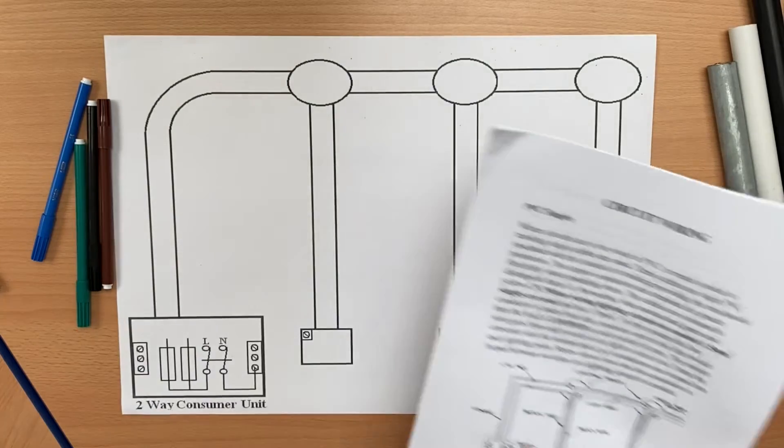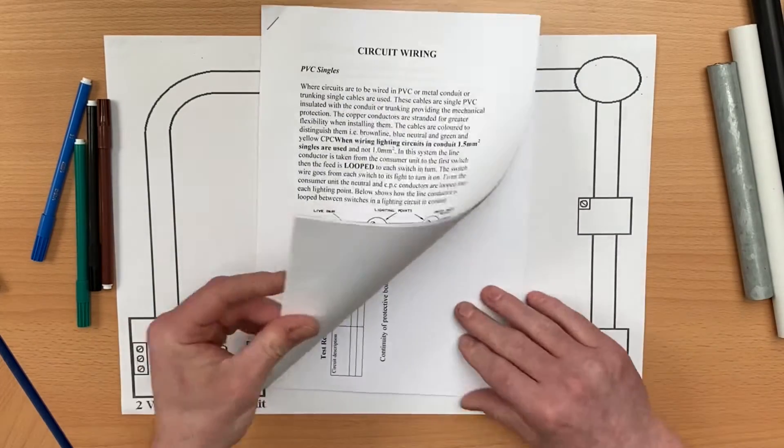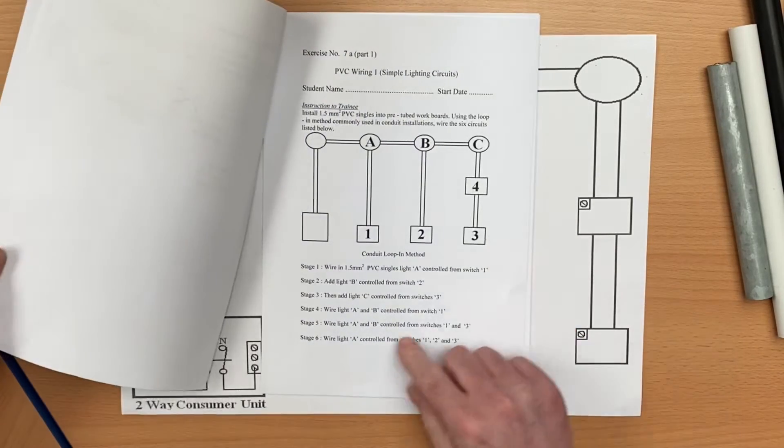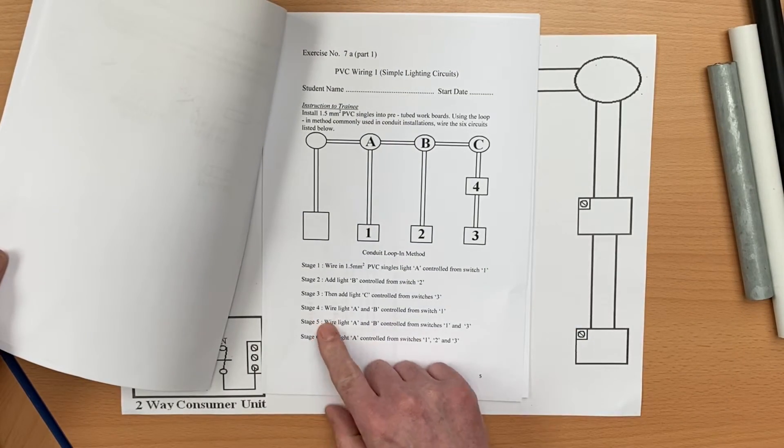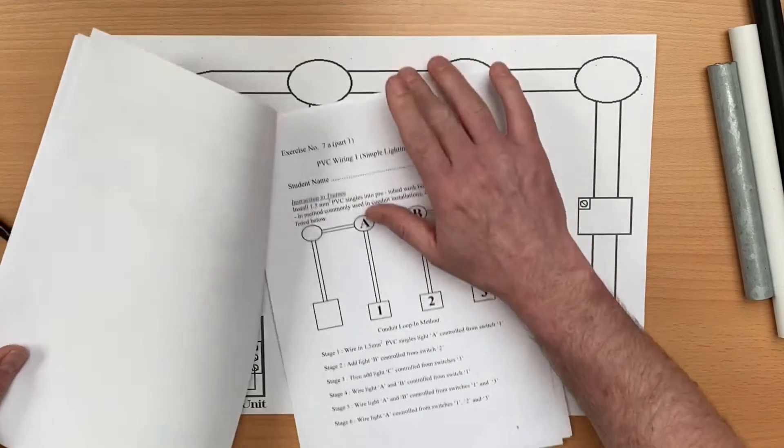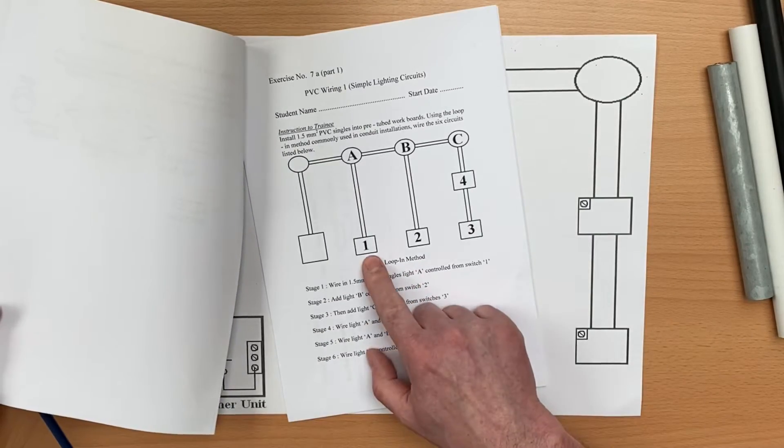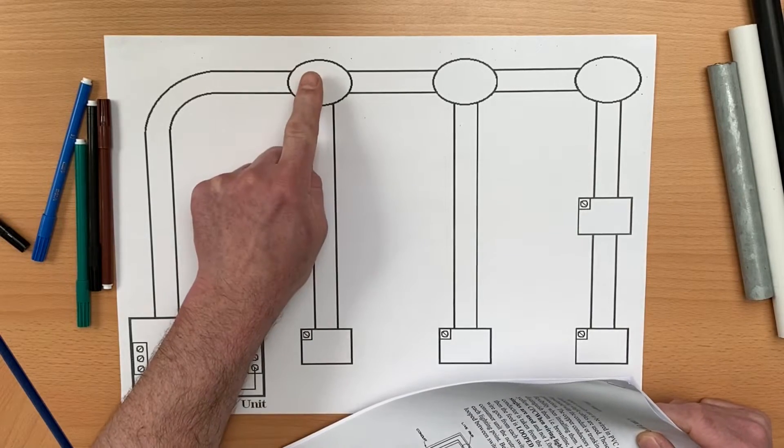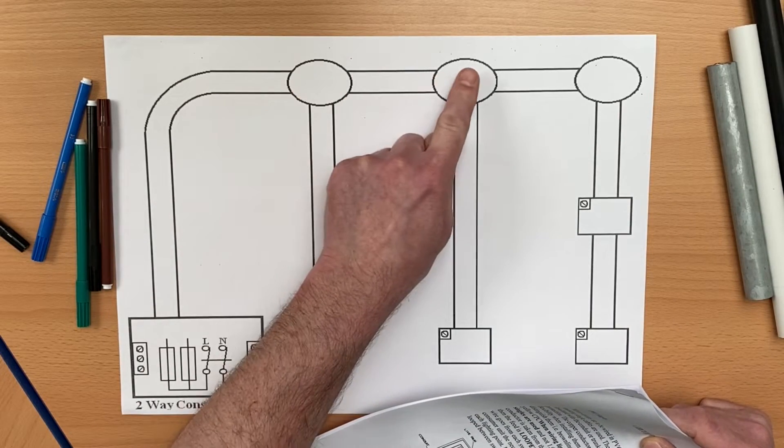What we're going to do now is move on to the fourth stage in this booklet. Stage 4 has lights A and B, these two here, controlled by switch number 1. So this switch now turns on this lighting point but also this lighting point here.